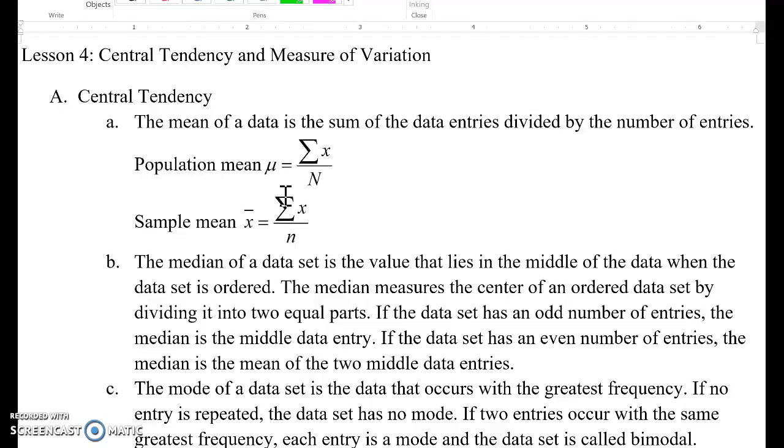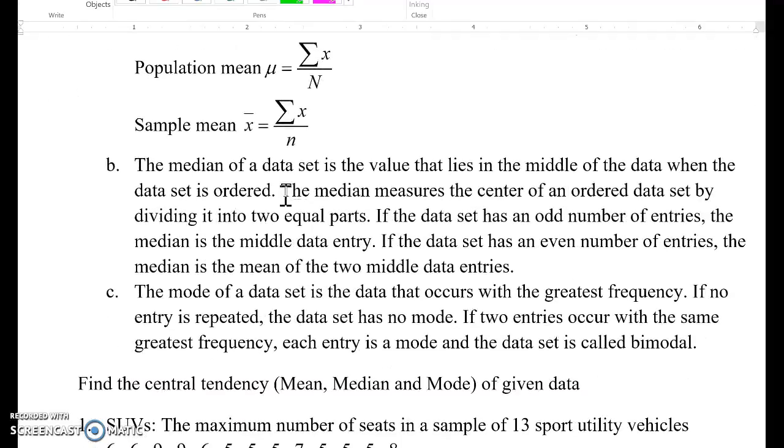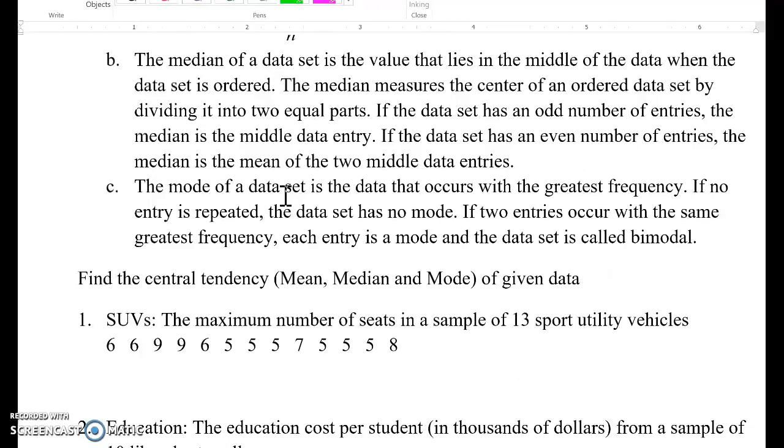I know this part is a little bit confusing, so I will explain in more detail when I actually show an example. The mode of a data set is the data that occurs with the greatest frequency. If no entry is repeated, the data set has no mode. If two entries occur with the same greatest frequency, each entry is a mode and the data set is called bimodal.